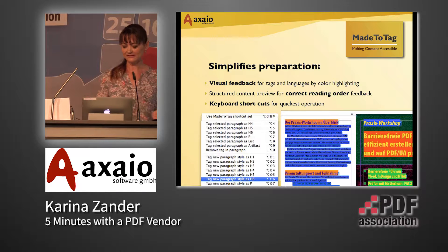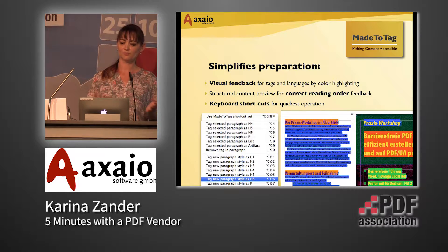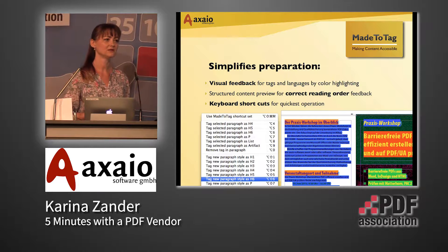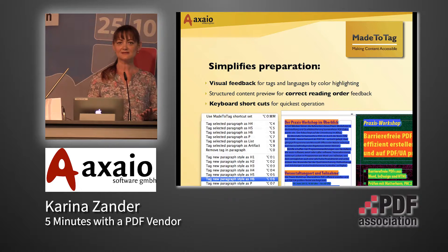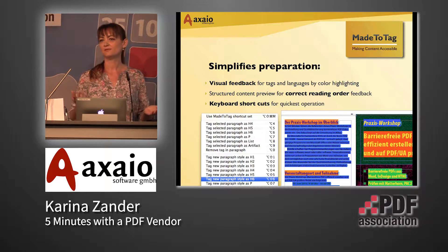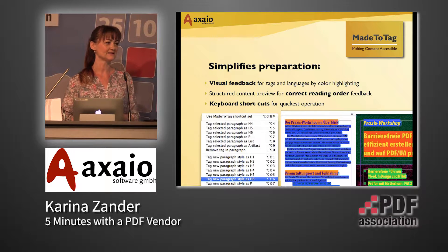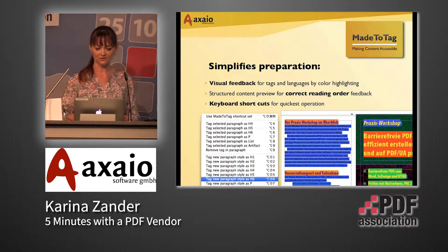Furthermore, you can get an instructed content preview to be sure that the reading order is set up correctly. And for all Made2Tag functions, you can use keyboard shortcuts to be very fast in your daily work, especially if you have to generate a large amount of accessible PDFs on a regular basis. This will save you a lot of time.